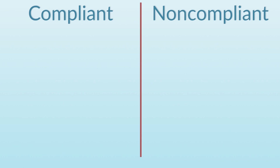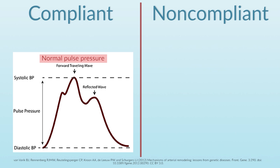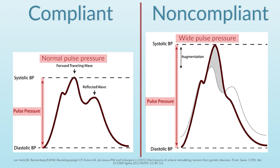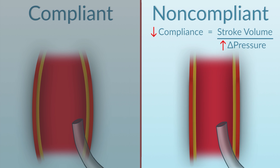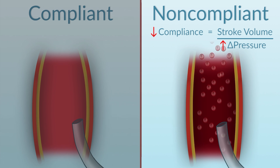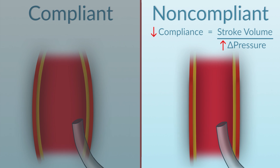Consider two patients: one who is young with a very compliant arterial system, and one who is elderly with a very non-compliant arterial system. If those patients have the same stroke volume, the patient with the compliant arterial system will have a much narrower pulse pressure — the difference between systolic and diastolic pressure — than the elderly patient with the non-compliant aorta, who will have a very wide pulse pressure. In the older patient, it's essentially like injecting into something resembling a lead pipe, where the entire stroke volume is displayed as pressure.